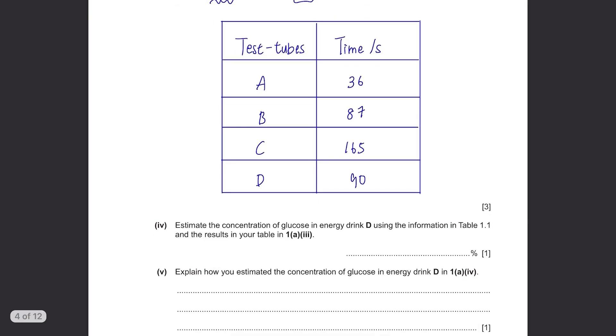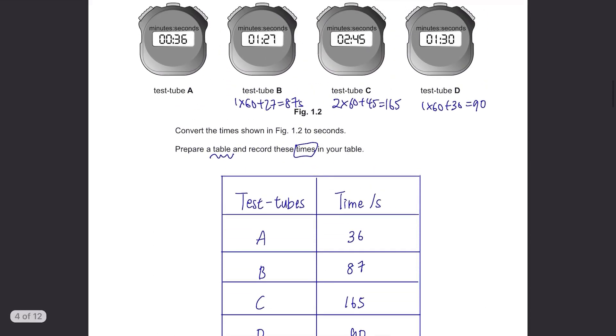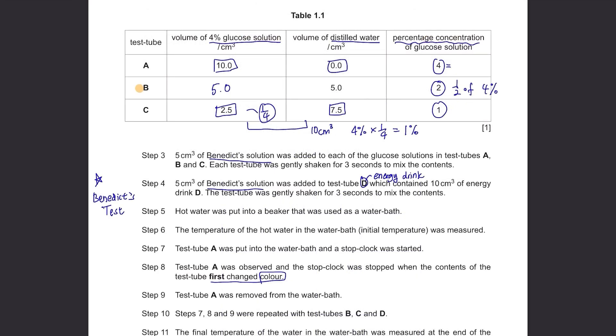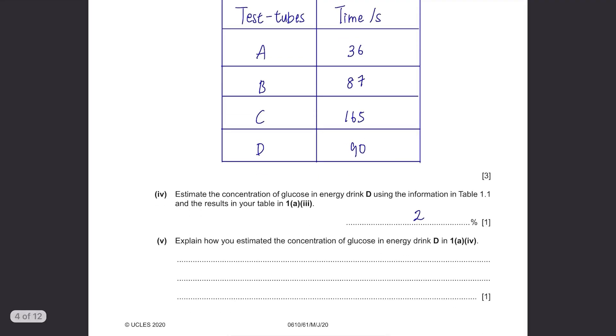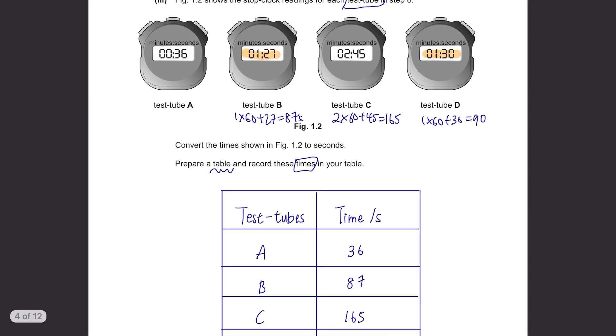Estimate the concentration of glucose in energy drink D using the information in table 1.1 and the results. Looking at the stop clock, the time taken for test tube B and D are quite similar, meaning they probably have same percentage of glucose. In table 1.1, the percentage of test tube B was 2%. So for test tube D, it should also be 2%. Explain how you estimated the concentration: the time taken for B was closest to time taken for D.